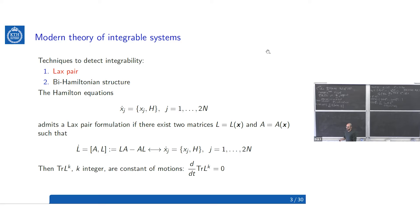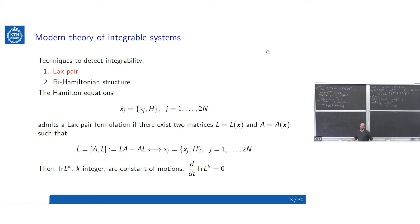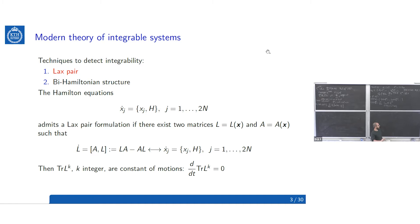We say that a Hamiltonian system admits a Lax pair formulation if there exist two matrices L and A such that the Hamiltonian equations are equivalent to this ODE system for these two matrices. Here L is called the Lax matrix and A is the companion matrix. This formulation is powerful because the traces of L to the power k for integer k are constants of motion, giving us a way to produce the n conserved quantities immediately.